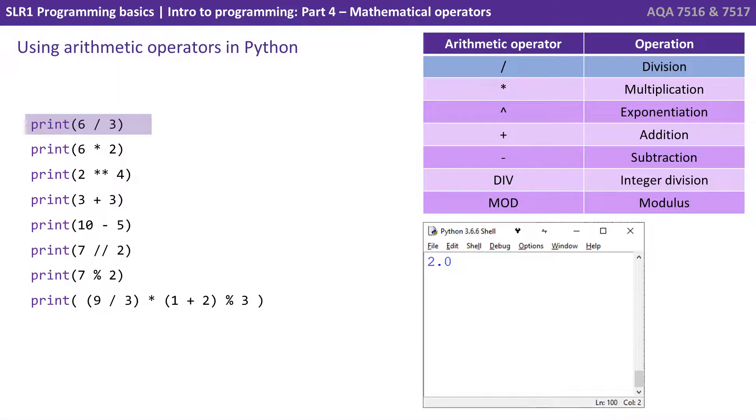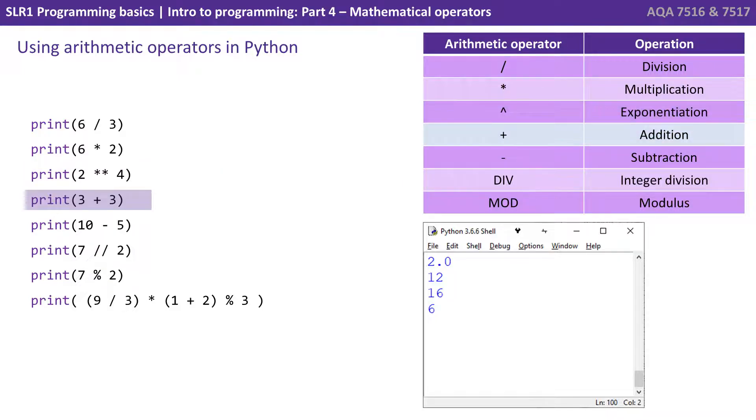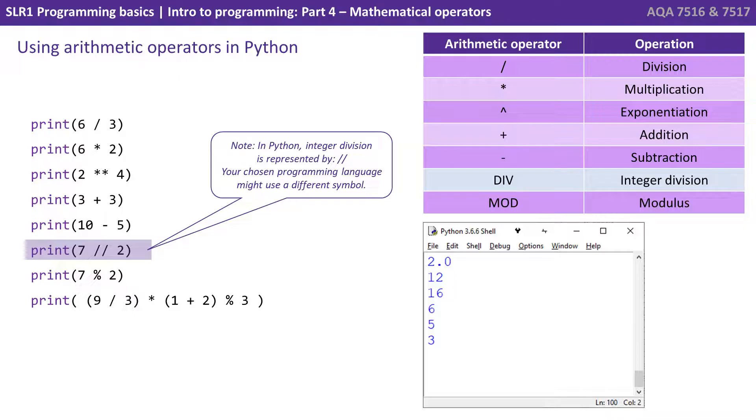So here we've got six divided by three, and we can see our Python output window down the bottom, and that gives us 2.0. Six times two gives us 12. 2 exponentiation four is 16. 3 plus 3 gives us 6. 10 minus 5 gives us 5. 7 divided by 2 gives us 3. Now note this is doing integer division, not standard division.